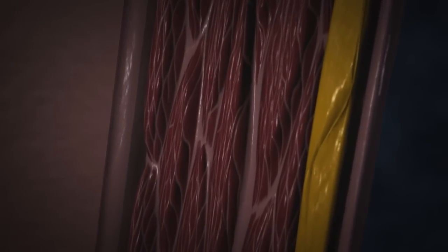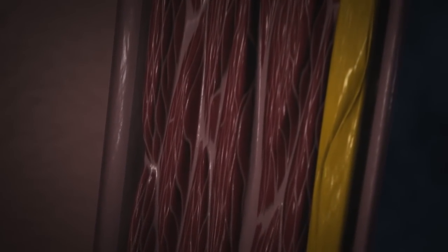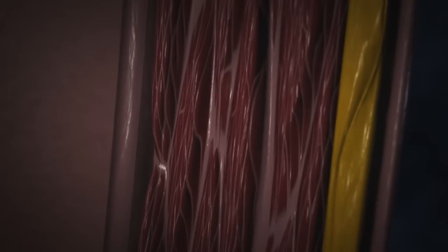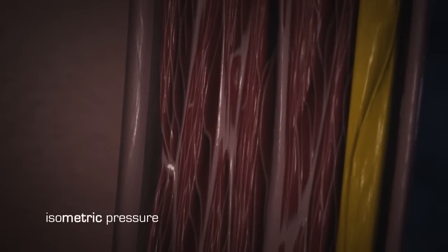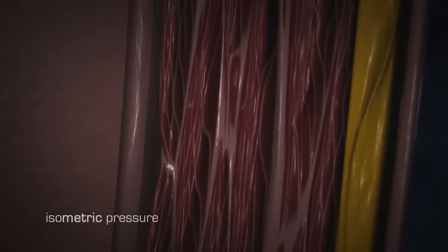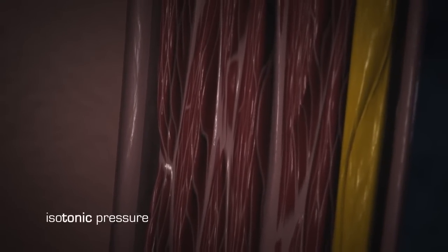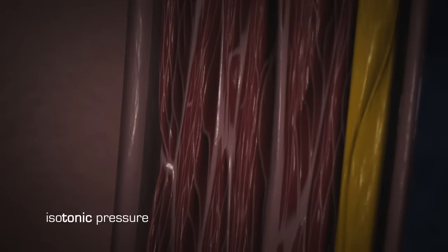When the bladder is blocked, urine inflow outpaces urine outflow. As the bladder fills, isometric pressure is put on the stretched muscle cells. When the bladder wall contracts but the urine cannot be expelled, isotonic pressure builds up in the muscle cells.